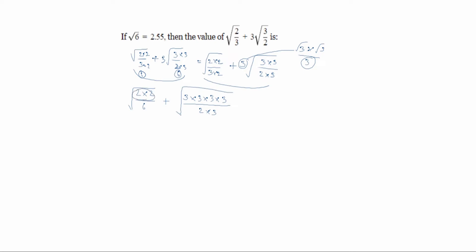We can write root 2 into 3 as root 6. Taking constants outside the root: we take 1/2 outside giving root of 1 by 6 for the first term, and for the second term, 1/3 is taken outside, giving 3 by 3. So we have 2 root of 1 by 6 plus 9 root of 1 by 6. Here 1 by 6 is common.